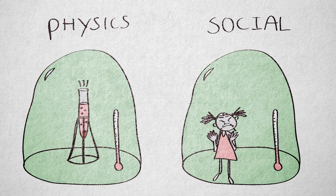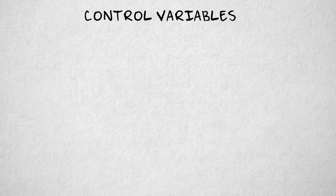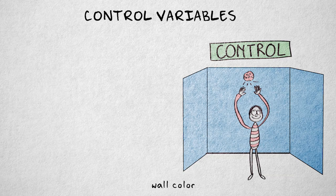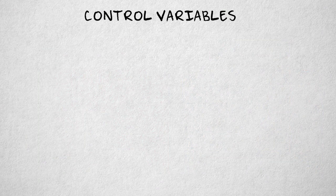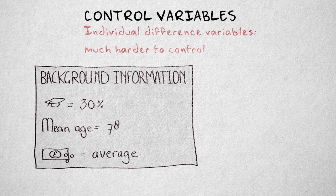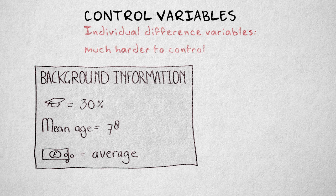Variables that are held constant are called control variables. In our video game study, we could make sure that the wall color is the same in all conditions. We wouldn't want the wall to be a calming blue in the control condition, and a bright, agitating red in the two violent gaming conditions, for example. It becomes much harder when the variables of disinterest are individual differences variables, like a participant's age or a country's average educational level. This is where randomization and matching come in, but I'll discuss both of these later.